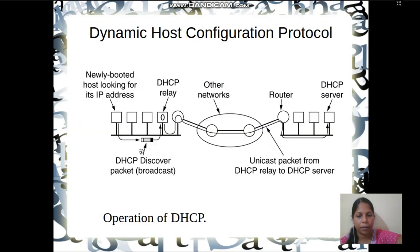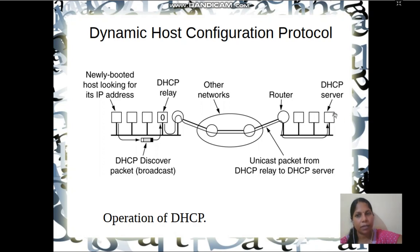Here is the working of DHCP: we have a set of nodes on a network. When a newly booted host looks for an IP address, it sends a DHCP Discover packet. The DHCP relay agent forwards this packet to another network. The unicast packet from the DHCP relay is forwarded to the DHCP server, which returns the IP address to the host. That is the working of DHCP. Thank you for listening.